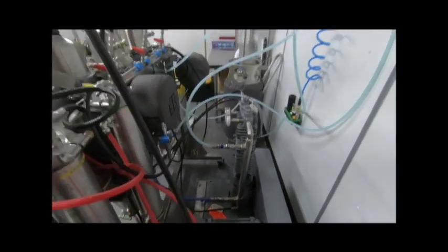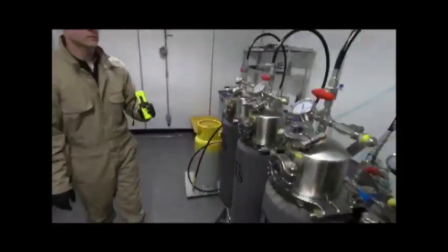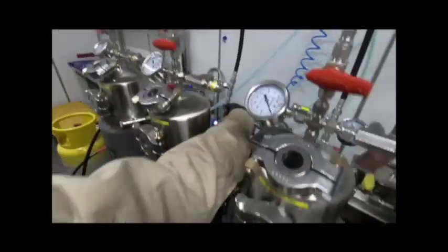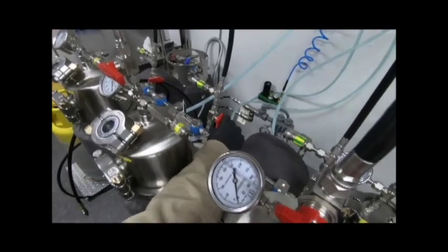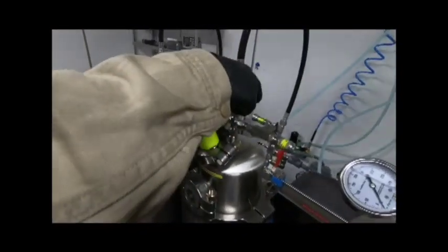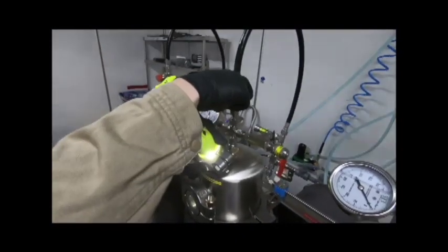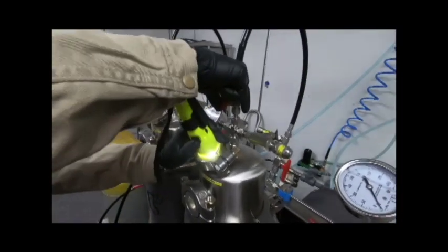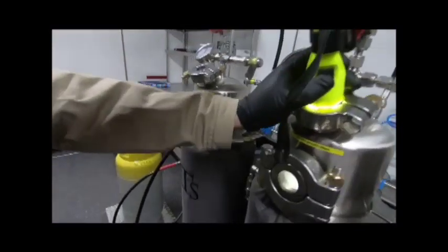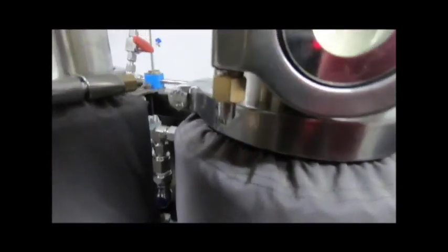Open red inlet valve on top of extraction vessel number two allowing 10 to 12 pounds of gas to flow through to extraction vessel number two. Continually monitor pressure and temperature of all available platforms.